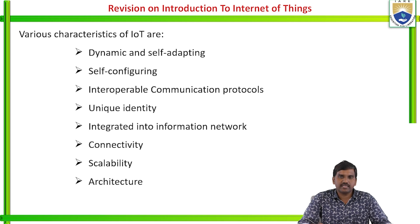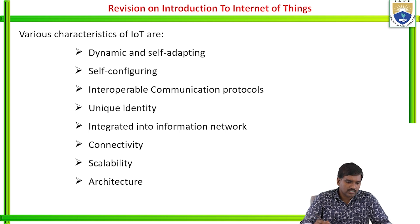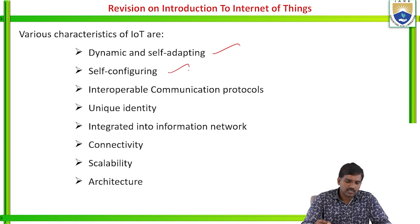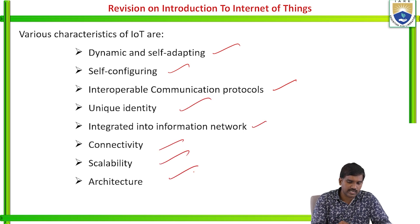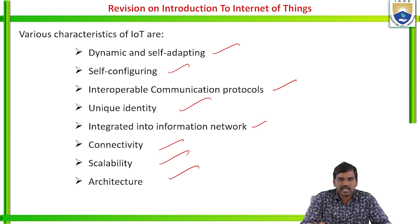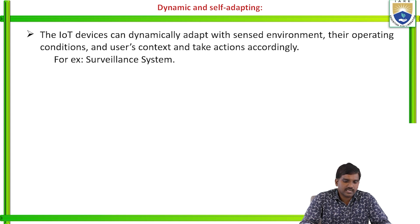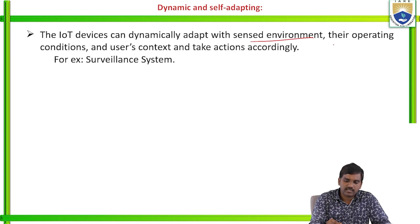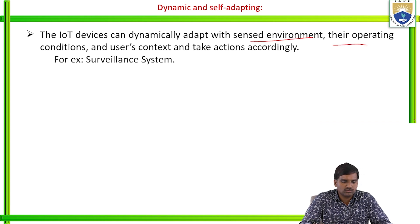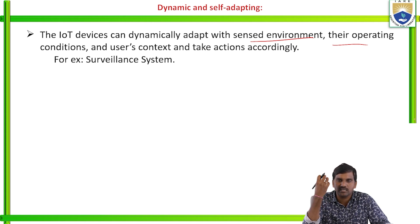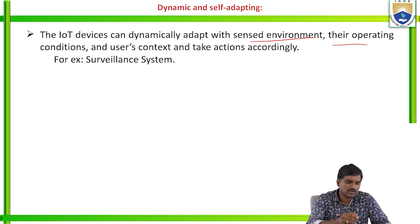The main characteristics of IoT are: self-dynamic and self-adapting, self-configuration of the network, interoperable communication protocol, unique identity, integrated into information network, connectivity, scalability and architecture. Dynamic and self-adapting means an IoT device can dynamically adapt with the sensory environment, operational conditions and user context to take actions accordingly. It depends on the situation — like a cellular system, it can decide what to do.